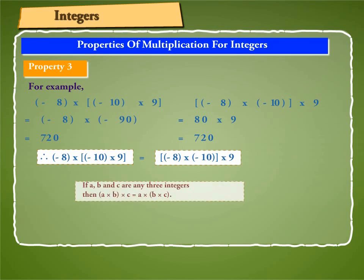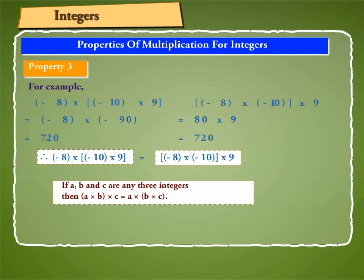Hence, if A, B, and C are any three integers, then A into (B into C) is equal to (A into B) into C. This is called the associative property of multiplication of integers.